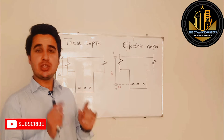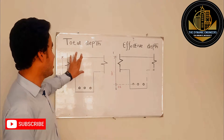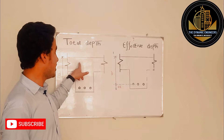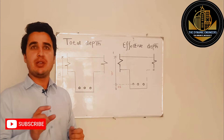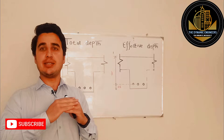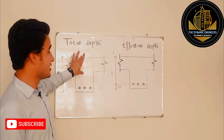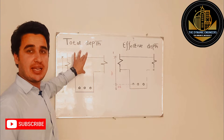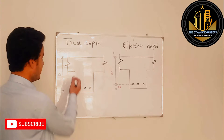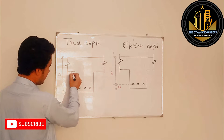Total depth is actually the depth of the hanging part of any beam plus the depth of the slab. If you look at this diagram I have drawn - this is a T-beam. A T-beam means when the slab and the hanging part of the beam act monolithically. Here you can see that both the hanging part of the beam and the thickness of the slab are working as a single part, and they are considered as a single part.